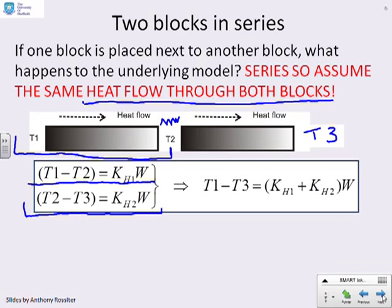Now, what we've noted at the top is that this W and this W must be the same. Because they've been arranged in series, I've got the same heat flow through both blocks. So now I can add these two equations and end up with T1 minus T3 equals KH1 plus KH2 times W. And hopefully you'll recognise that this has the same form as we've been deriving in previous slides.